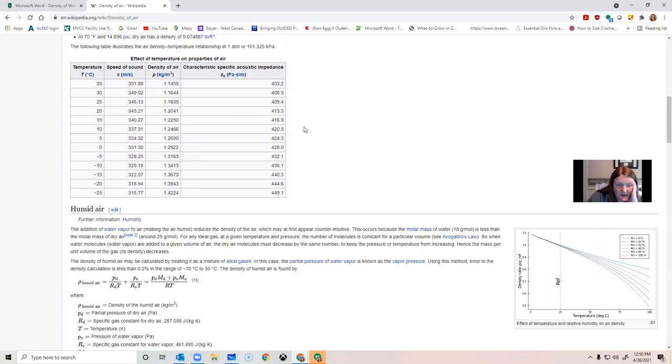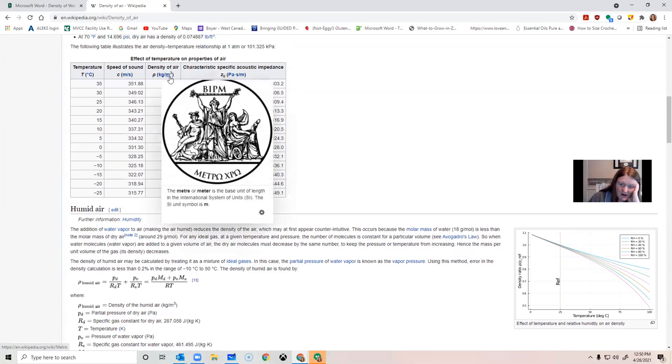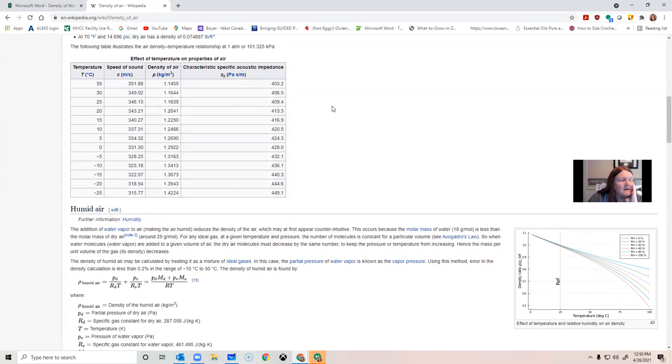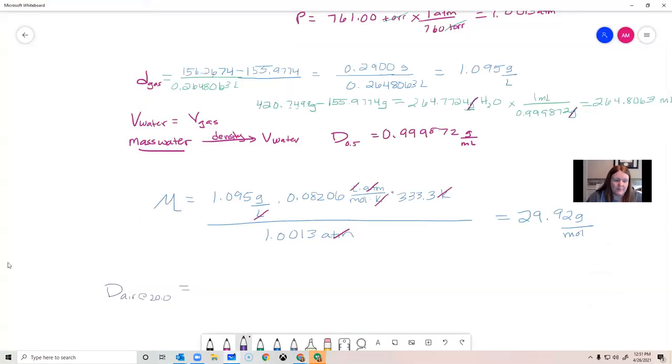You're going to find all kinds of goofy units because lots of different engineering projects essentially need the density of air in different units. But if you search specifically for grams per liter, it will be less confusing for you. Or you can actually do unit conversions if you'd like. I'll tell you that kilogram per meter cubed, which is a very common unit for the density of air, ends up being the same thing as gram per liter if you convert it correctly. So I could just use this at 20 Celsius. I get 1.2041 is the density of air. Again, citing your source in your lab report.